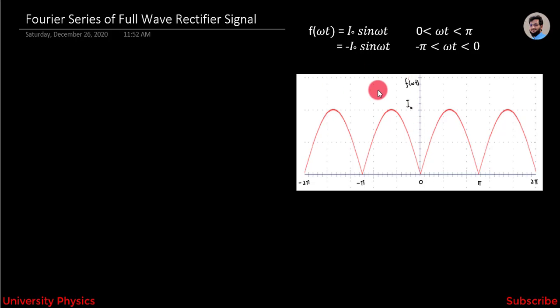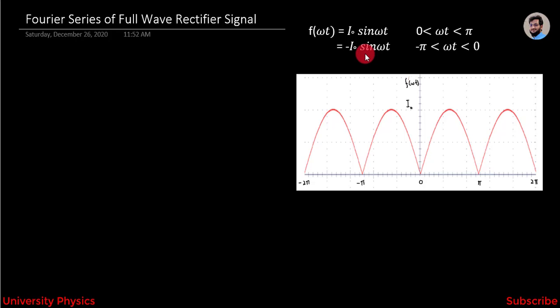This is the graph of the given function. Before solving, we need to know the nature of this function. If we look at this graph, it is clear that the graph is symmetric about the y-axis. Therefore the given function is an even function. We know that for an even function, bₙ = 0. Here we have to find the values of a₀ and aₙ.